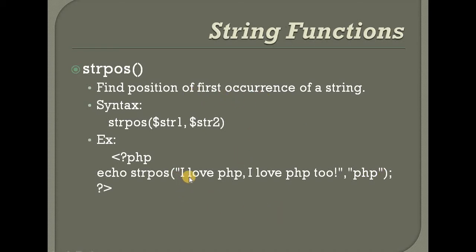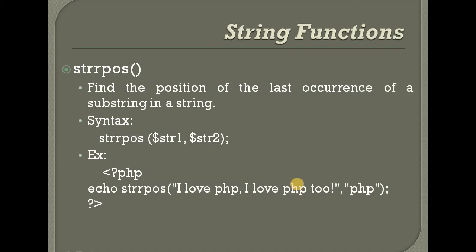Counting positions: 1, 2, 3, 4, 5, 6, 7. That means the name PHP exists at that position in the string. It will print the string position. The second string: 'I love PHP2' — if you search PHP, it prints the str position.